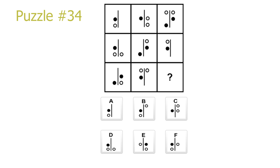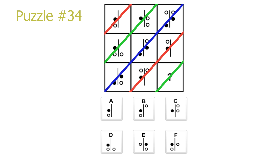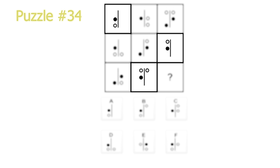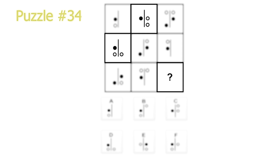Let's start by looking at the pattern of the black dots. The black dots repeat on these diagonals from top right to bottom left. If we look in any of these lines, we can clearly see that the black dots repeat in position. The blue diagonal has one black dot on the middle right and one on the bottom left. The red diagonal has one black dot on the middle left. And finally, the green diagonal, which our answer is in, also has one black dot on the middle left.